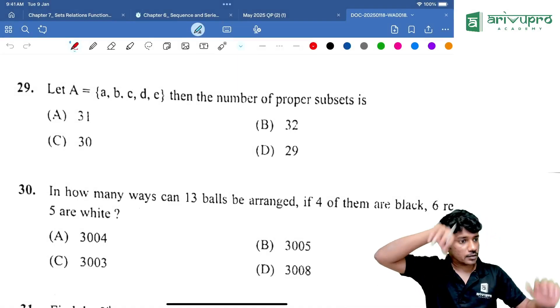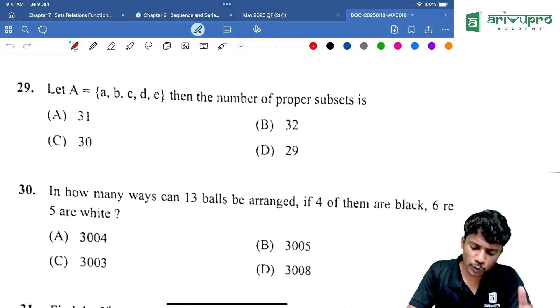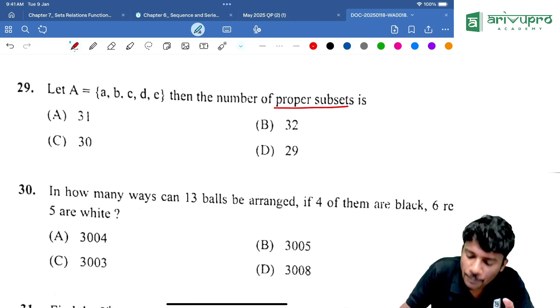So, this is Jayanatom question paper. Everyone look here. First one, let A is equal to set of A, B, C, D, E, then the number of proper subset.